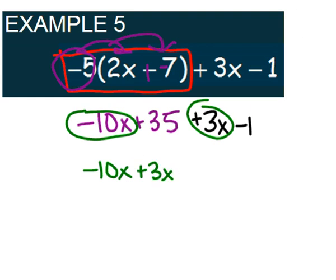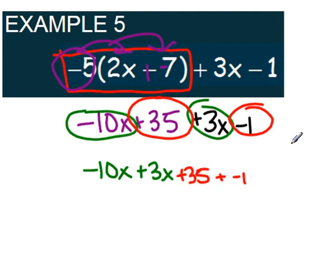Then we can group together our constants, the plus 35 and the negative 1. So plus 35 and plus a negative 1, or you can leave that as a minus 1.